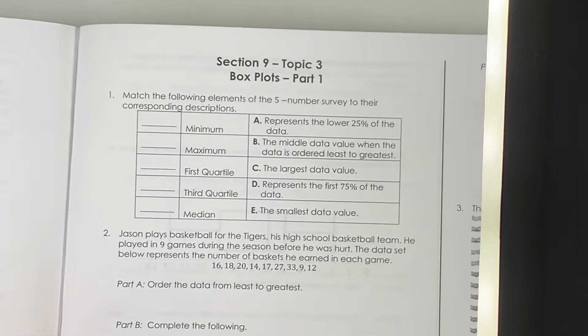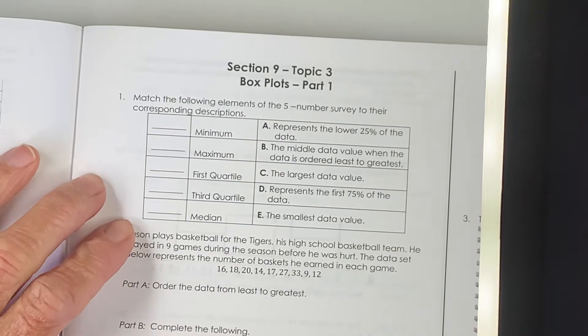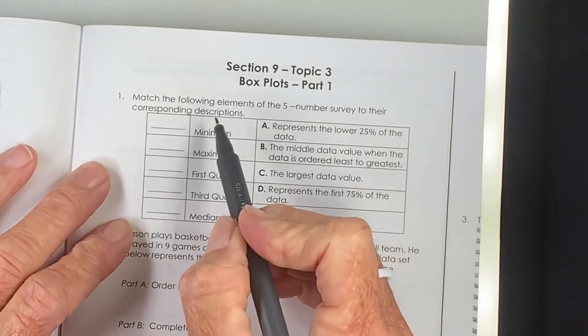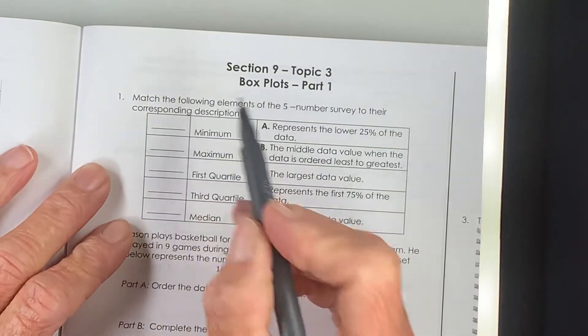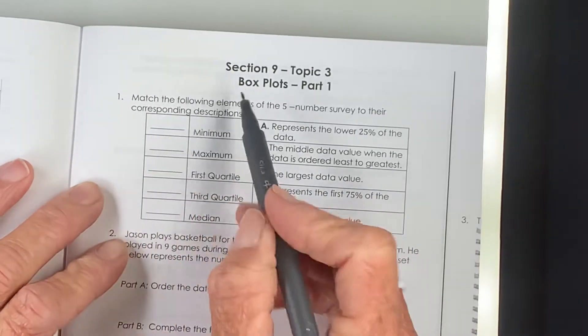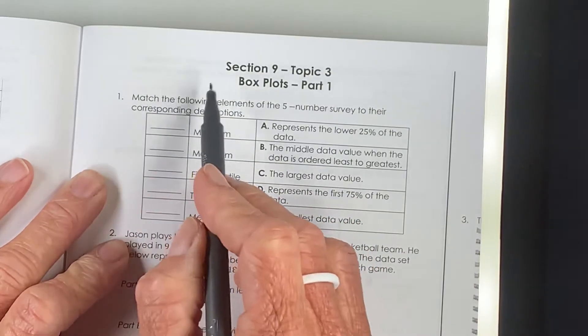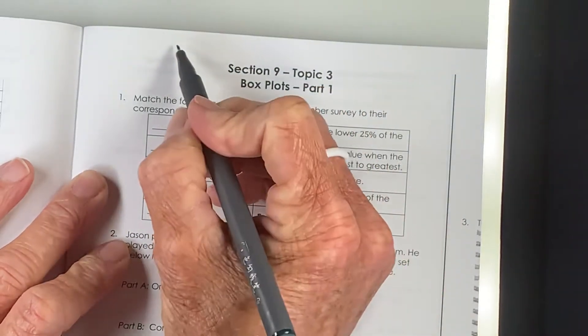So a brief review of box plots. A box plot is a way to organize our data and we split the data into four equal pieces. Those pieces may not always look equal when looking at the plot itself, but we know for sure that 25% of the data is in each section.